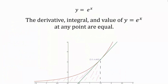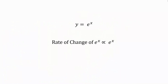Essentially, the derivative, integral, and value of y equals e to the x at any point on the graph are equal to each other. This elegant property means that the rate of growth of e to the x is proportional to its current value, making it a natural representation of continuous growth. As x increases, e to the x grows at a rate proportional to its current size, mirroring the way many natural phenomena evolve over time. This property makes e to the x indispensable in calculus, seamlessly describing rates of change and dynamic growth, emphasizing the inherent link between Euler's number and natural growth throughout mathematics.